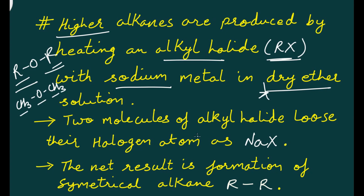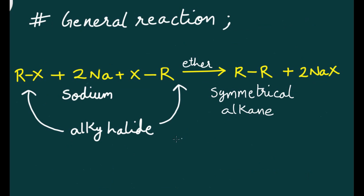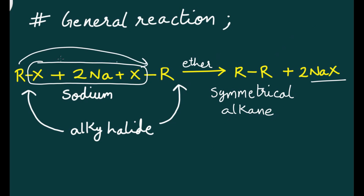In the reactant, you have to take two molecules of alkyl halide. These two molecules lose their halogen atoms as sodium halide, and the net result is the formation of a symmetrical alkane. In the general reaction, two alkyl halide molecules react with two sodium atoms. Sodium takes up the halogens to give sodium halide, and the two alkyl groups combine to give a symmetrical alkane.